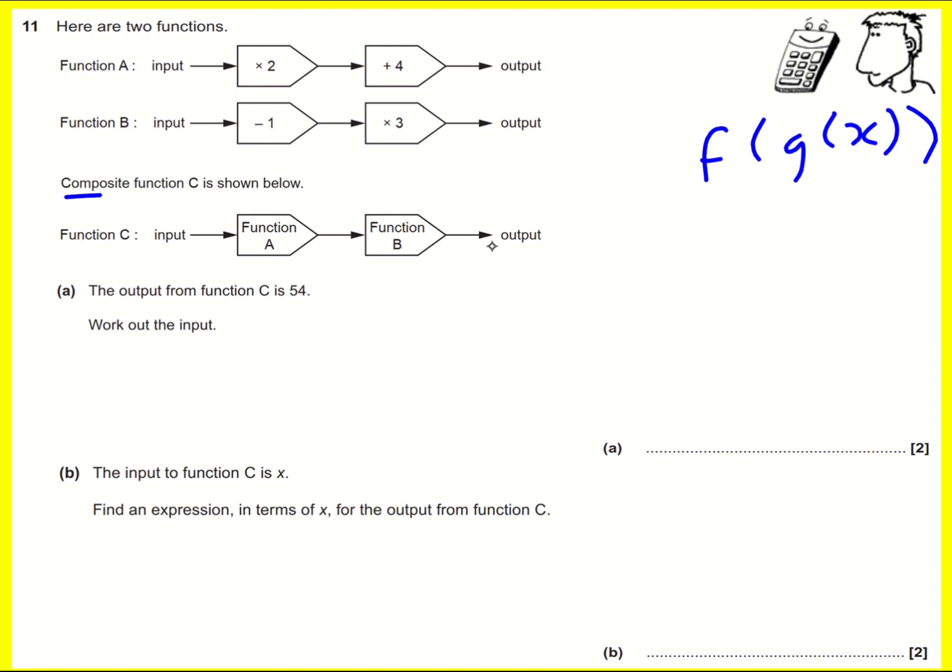So the output from function machine C is 54. That's right at the end. So let's try and figure out what happens if I take it backwards. So if I put it as the output to function machine B, then what I'm going to do is go backwards, and I'm going to divide by 3. And that's going to give me 18 at this point.